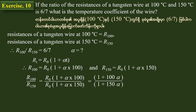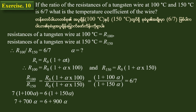Solving the equation: 7(1 + 100α) = 6(1 + 150α), which gives 7 + 700α = 6 + 900α, so 200α = 1. Therefore alpha is equal to 1 divided by 200, which is 0.005 per degree Celsius.